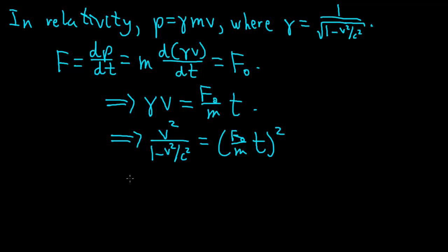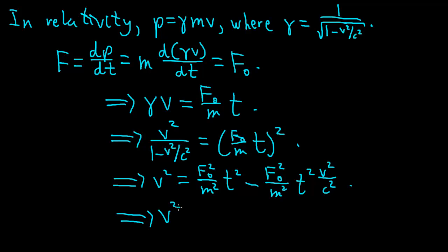We multiply both sides by the denominator, so v squared equals F0 squared over m squared times 1 minus v squared over c squared. This gives us F0 squared over m squared t squared minus F0 squared over m squared t squared times v squared over c squared.